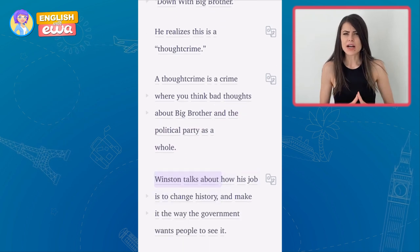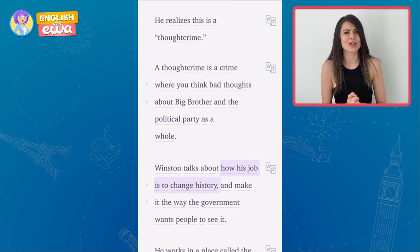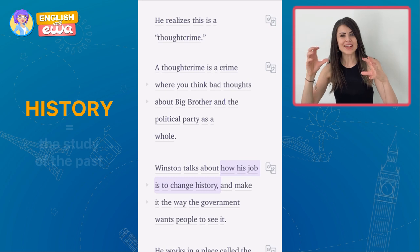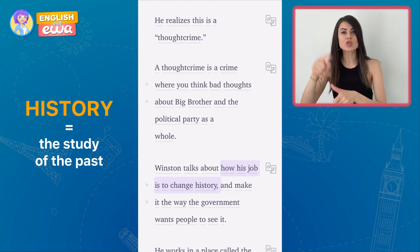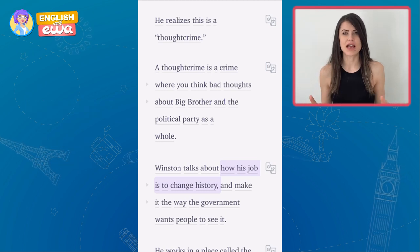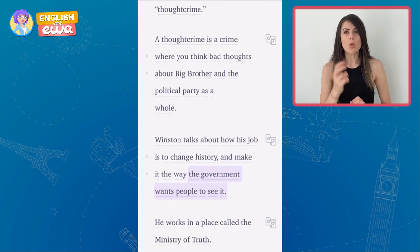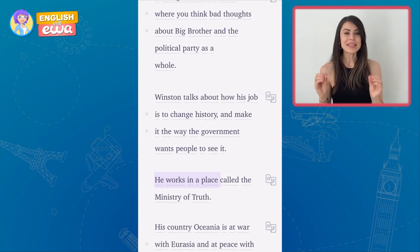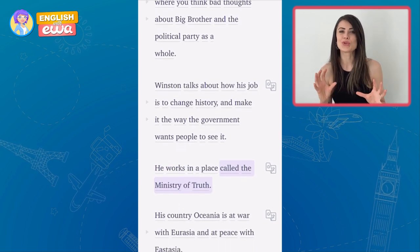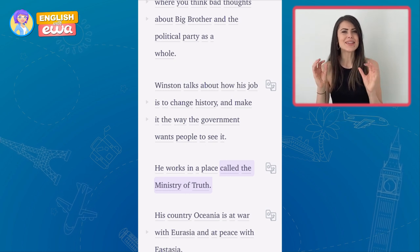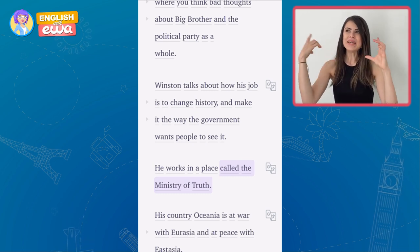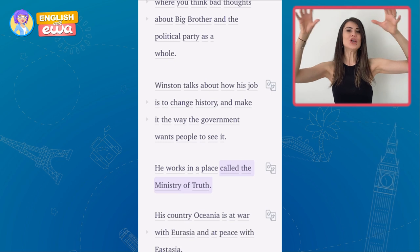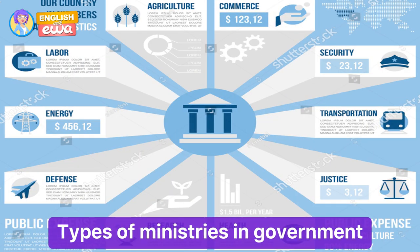Winston talks about how his job is to change history. History refers to events, especially past events in a chronological order. He wants to change history to make it the way the government wants people to see it. He works in a place called the Ministry of Truth. Truth is the opposite of lies. And a ministry, as I said, in the government you have different bodies and organizations, and each of them is called a ministry.